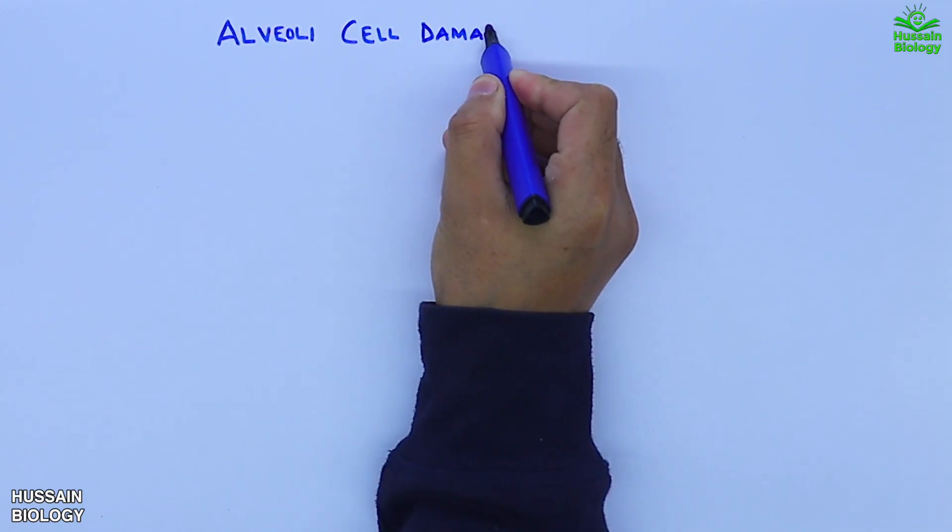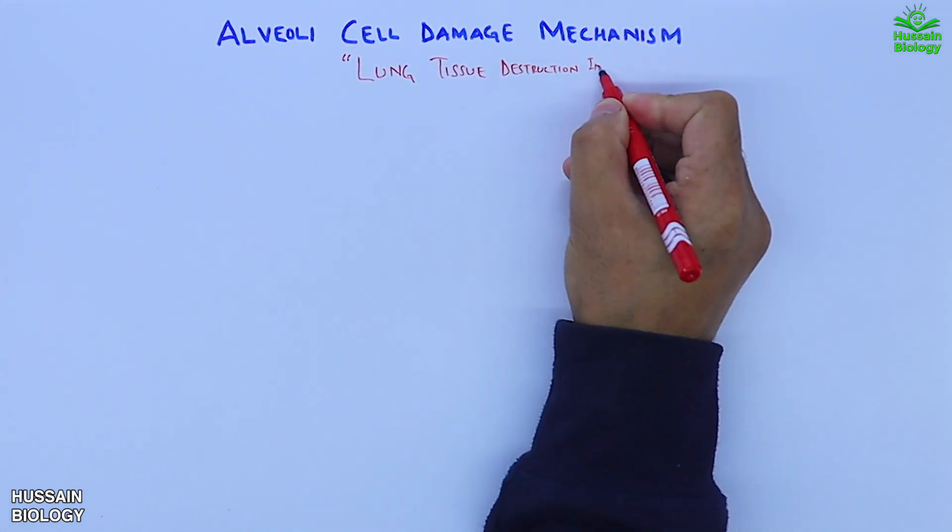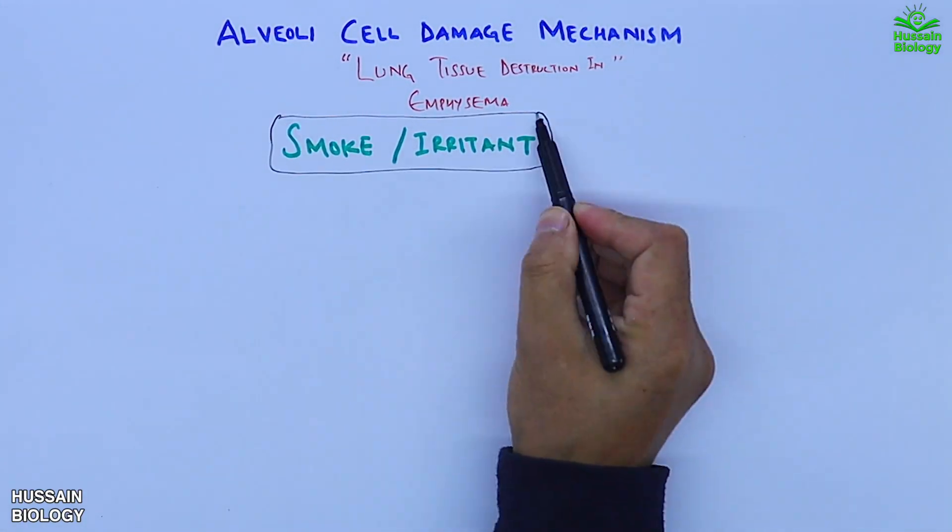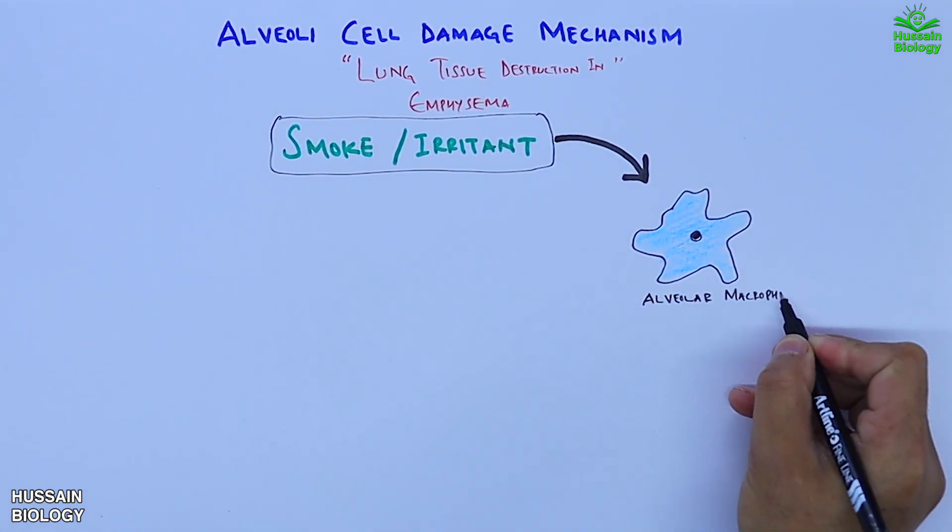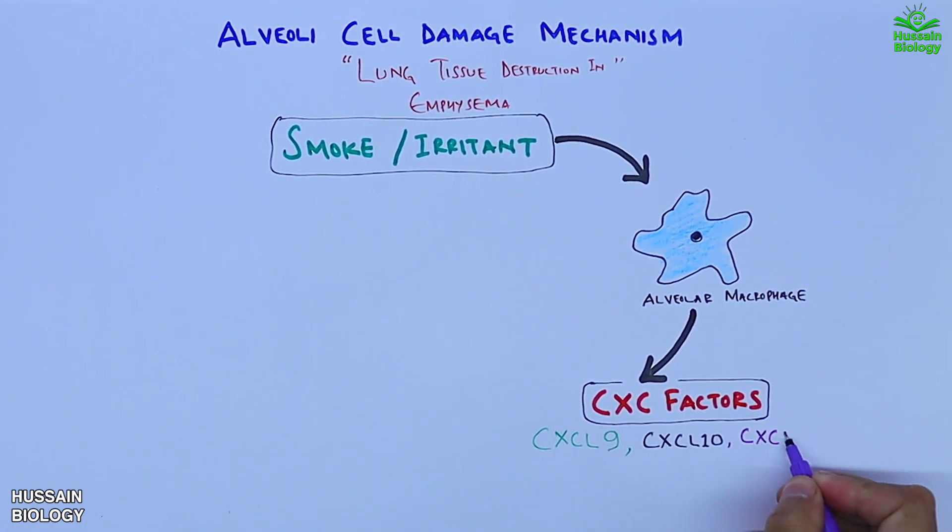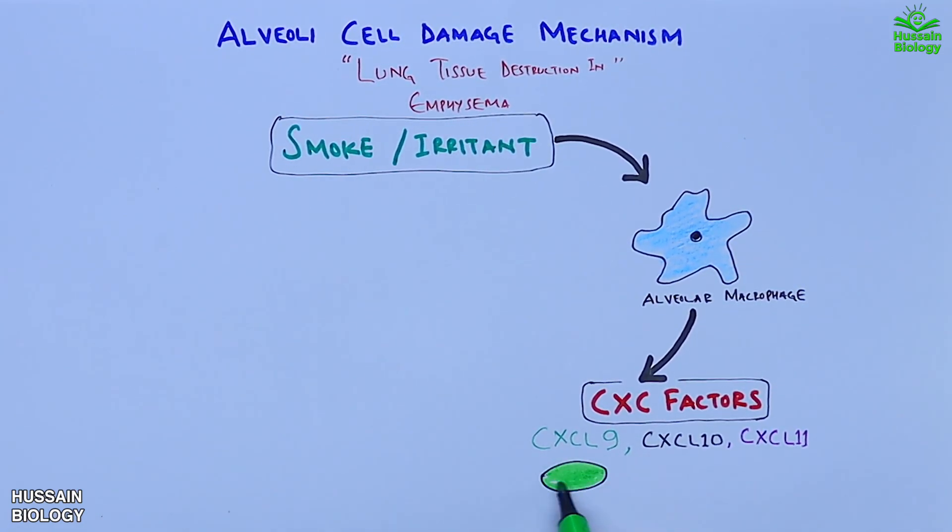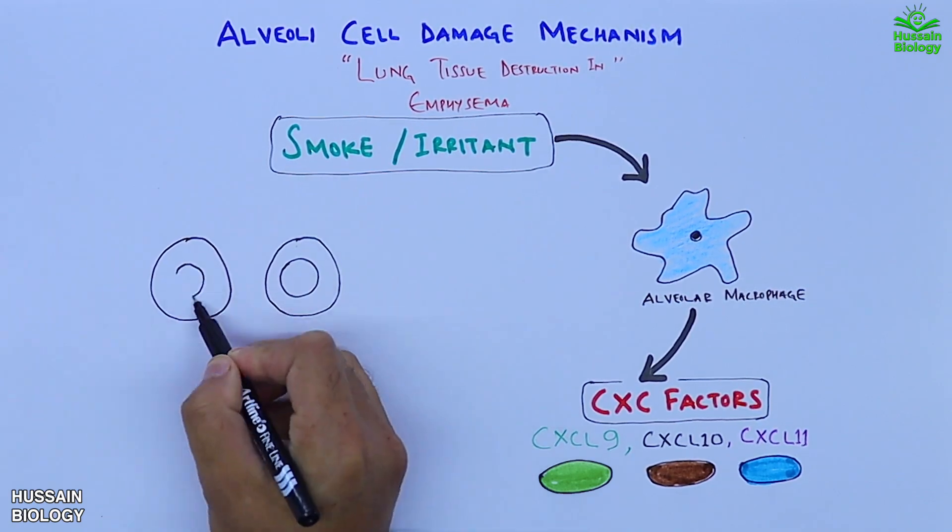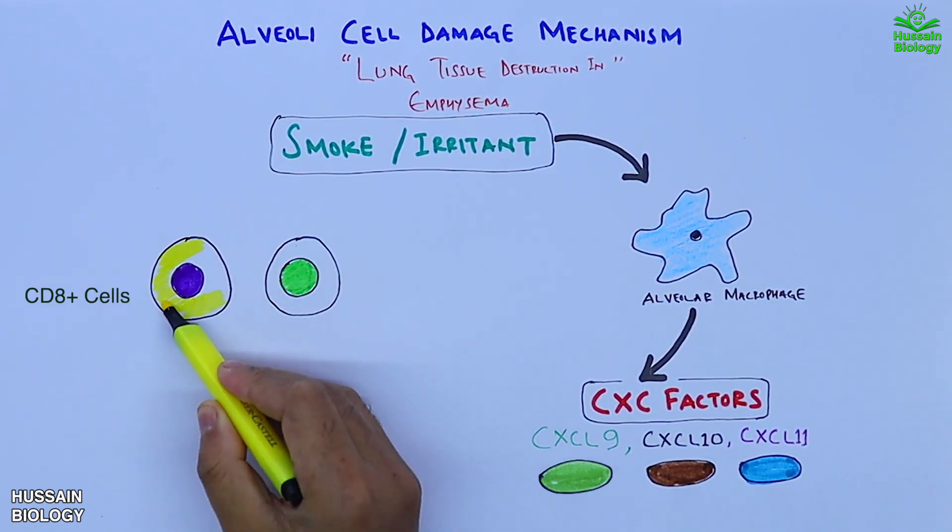Furthermore, let's see the alveolar cell damage mechanism. When smoke stimulates the alveolar macrophages to release CXC factors, we get the release of CXCL9, CXCL10, and CXCL11. For these ligand molecules, we have CD8 positive cells shown in the diagram, the TH1 and TC1 forms of CD8 cells.